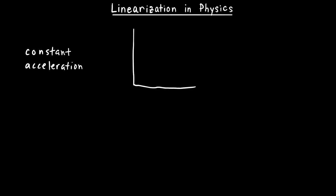The first thing I'd like to do is consider a graph of this object's velocity as a function of time. Let's assume that the object starts off with zero velocity, right at the origin, and that the acceleration is positive. So this object, initially starting with zero velocity, as a result of this positive constant acceleration, would speed up.